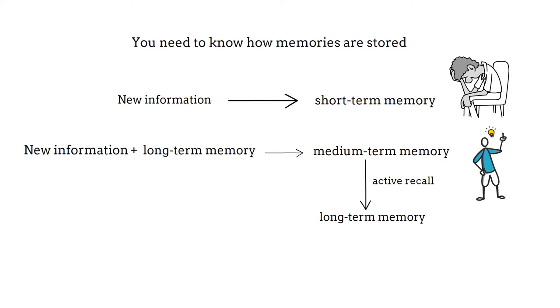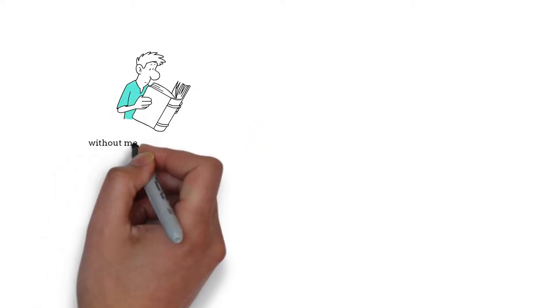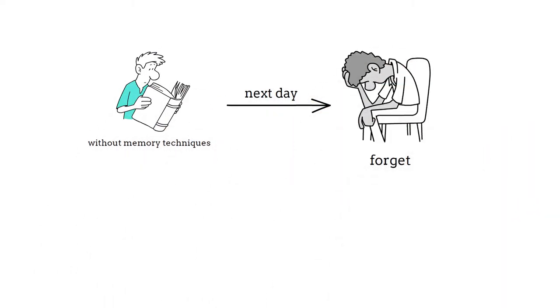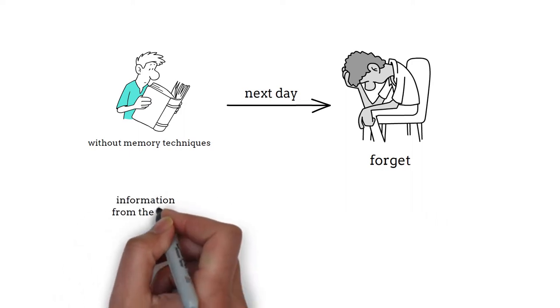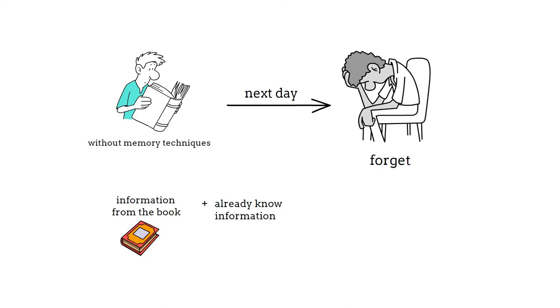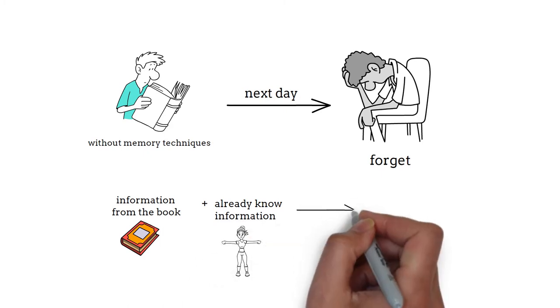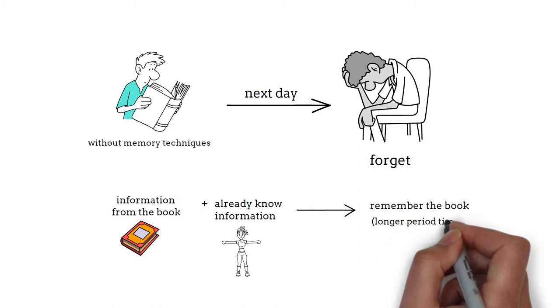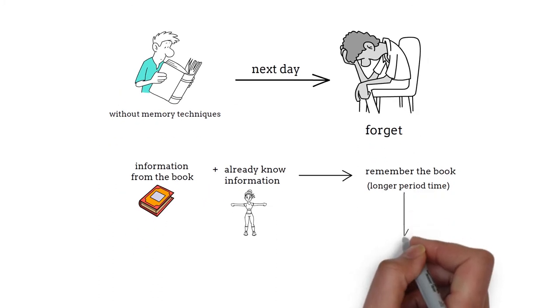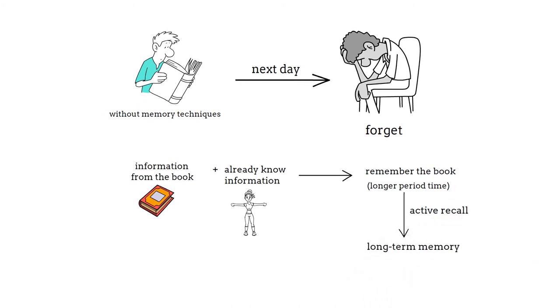For example, if you are reading a book without any memory techniques, you will forget it the next day. You might have already noticed this before. But if you combine the information from the book with something that you already know, such as locations on your body, you will be able to remember the book for a longer period of time. And if you perform an active recall, that information will be moved permanently to the long-term memory.